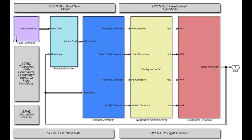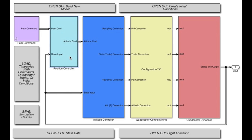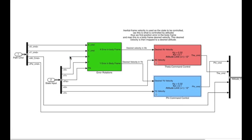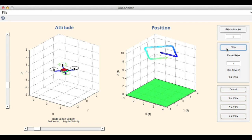We also created a position control system model, which allows the vehicle to respond to X, Y, Z, and yaw position commands. Here our controller is shown flying the quadcopter through a simple pattern, which can be seen in the state plots, but is most easily visualized using the animation GUI.